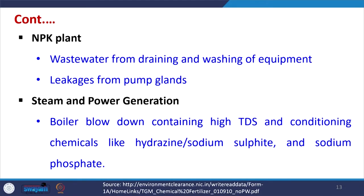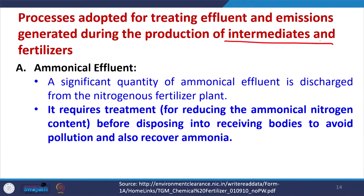The NPK plant generates wastewater from draining and washing of equipment and from leakages at pump glands. In the steam and power generation unit, boiler blowdown containing high TDS and conditioning chemicals such as hydrazine, sodium sulphite, and sodium phosphate may also be generated.